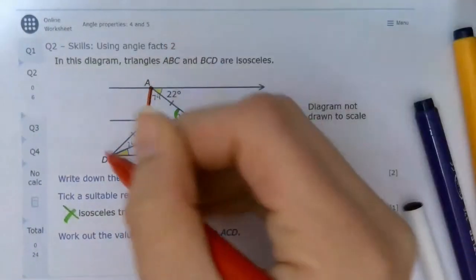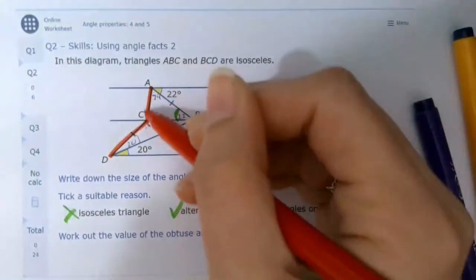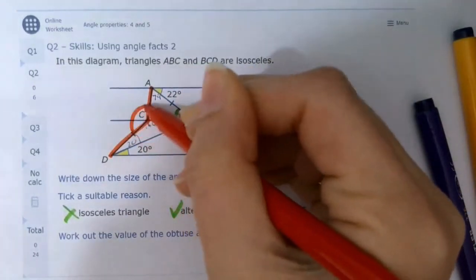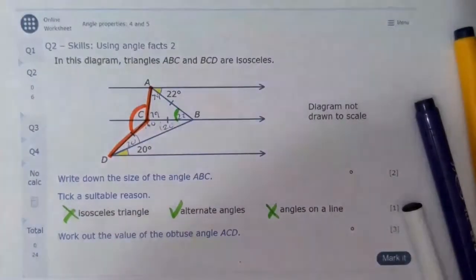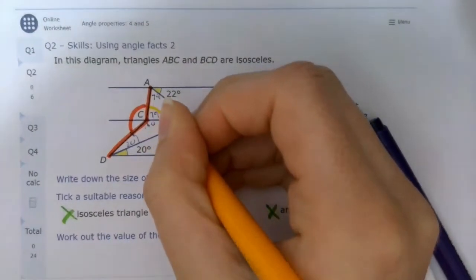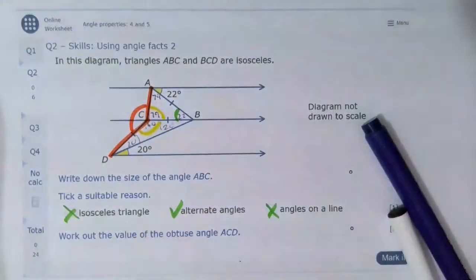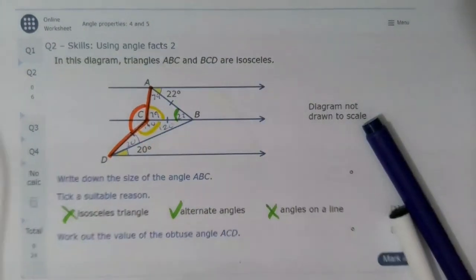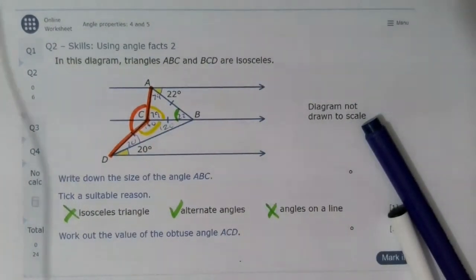I want to find the obtuse angle ACD. So from A to C to D, there's two angles: one is obtuse and one is reflex. I want to find this one here. I already know because I've just worked out that this part of the angle is 79 and this part of the angle is 140, which means that the yellow side adds up to 219. And then I can work out what the red side must be because they make a full turn.